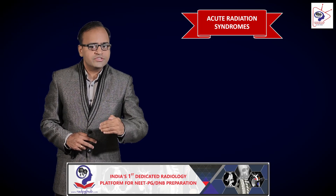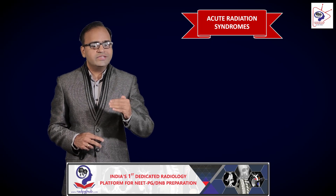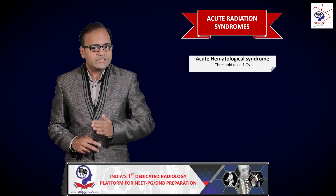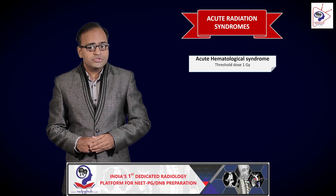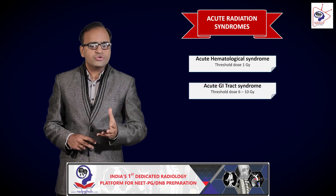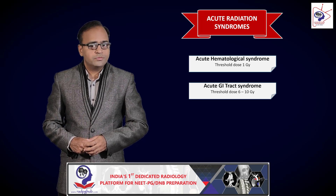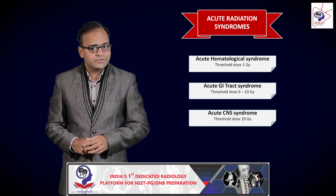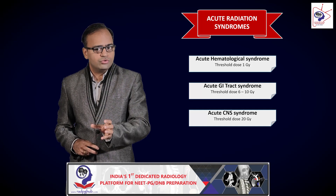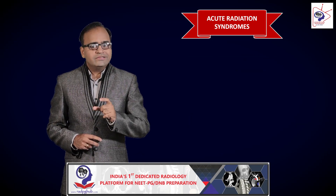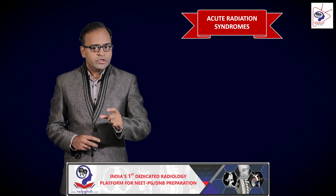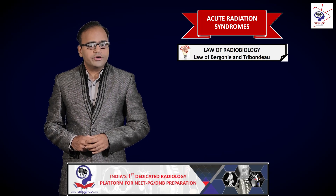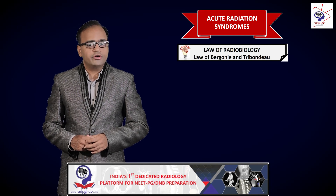That is one reason why different radiation syndromes have evolved. The first radiation syndrome created in the body is the acute hematopoietic syndrome, seen at a threshold dose of around 1 to 2 grays. The next organ system affected is the GI tract, producing the acute GI tract syndrome, seen at a threshold dose of around 6 to 10 grays. One of the last systems to be affected is the central nervous system, producing the CNS syndrome at a threshold dose as high as around 20 grays. This factual topic of acute radiation syndromes is actually based on a beautiful core concept called the law of radiobiology.